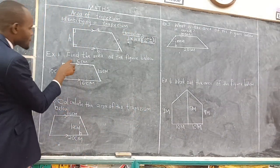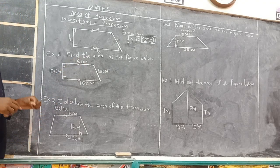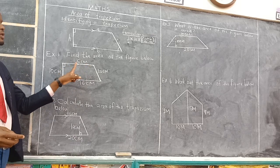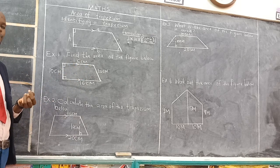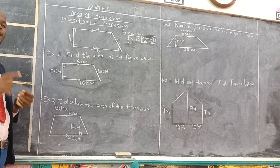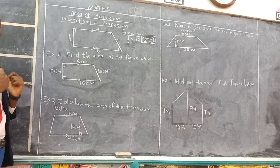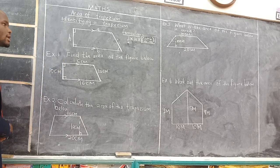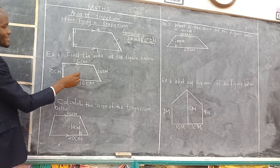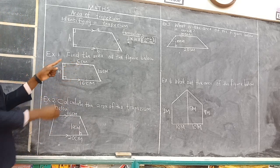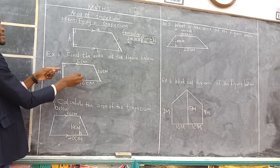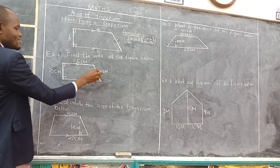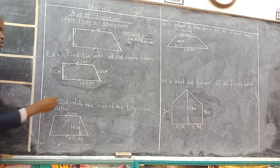Example one: Find the area of the figure below. It is your responsibility to find out whether the figure is a trapezium or a parallelogram — remember those two quadrilaterals have different formulas for getting area. This one is a trapezium. Why? It only has one pair of parallel lines. This line and that one are not parallel, so we only have one pair.